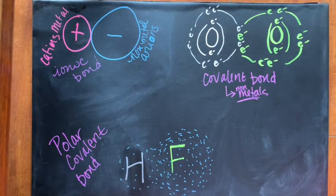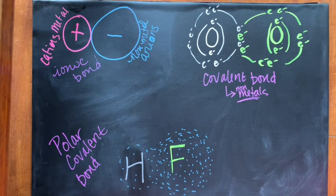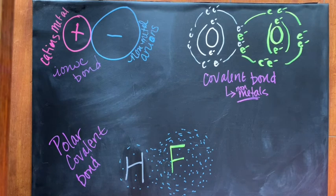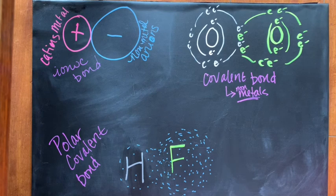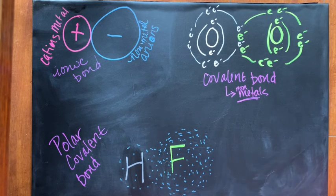Their bond is formed because they've transferred an electron from the metal to the non-metal, and now we have a positive and a negative charge. We know that positives and negatives are attracted to each other. So that's the basics of an ionic bond.